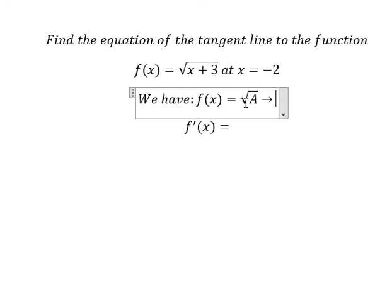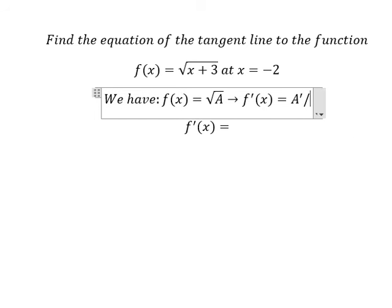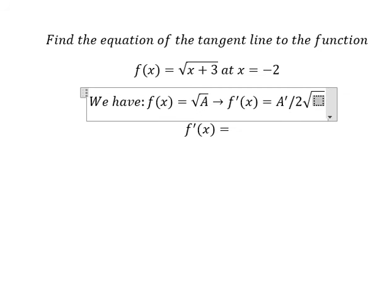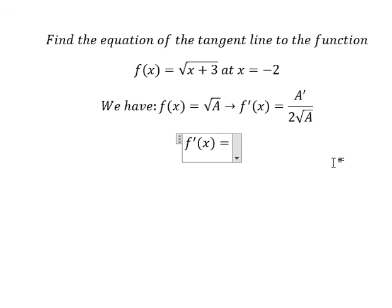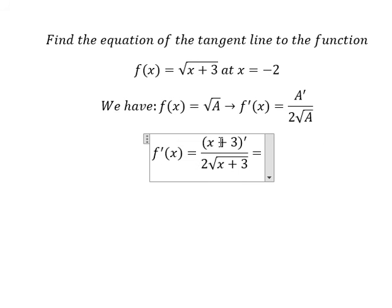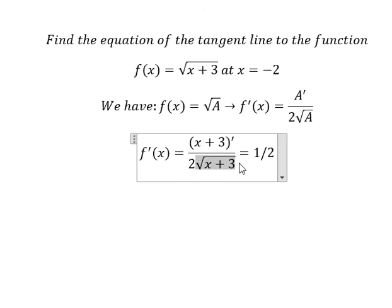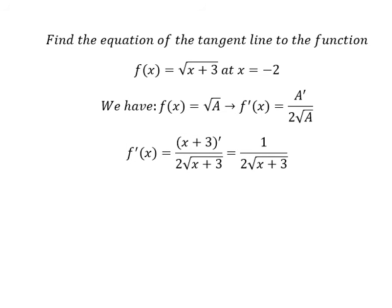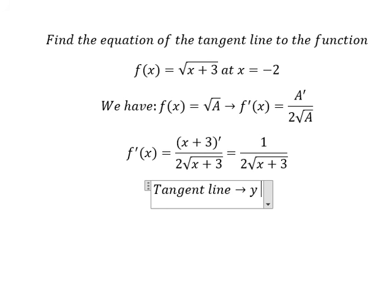If we take the first derivative of this, we have the first derivative of a over two with the square root of capital A. If we apply the formula, the derivative of the constant is zero, and we are left with one over two times the square root of s plus three. Now we can apply the formula of the tangent line, which should look like this.